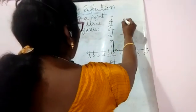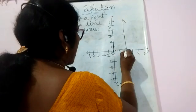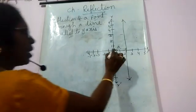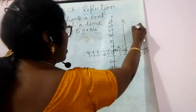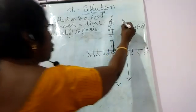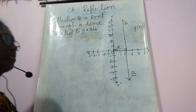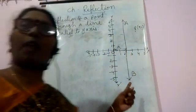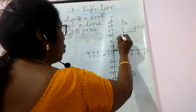Now let me explain when a point reflects through a line parallel to the y-axis. Let me draw a line parallel to the y-axis at a distance of 'a' units from the y-axis, meaning the x-value is a, so the equation is x = a. Let P be a point in a plane. When point P reflects through this line AB, what are the coordinates? Same as we did for the line parallel to the x-axis, we draw a perpendicular PM to AB.